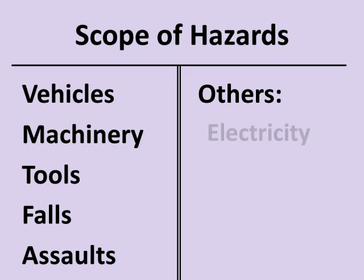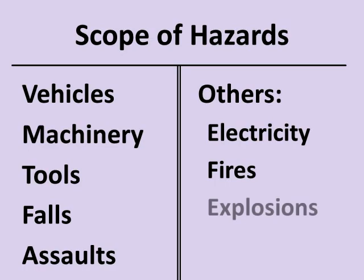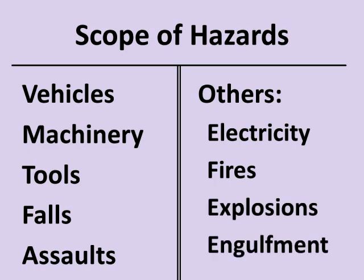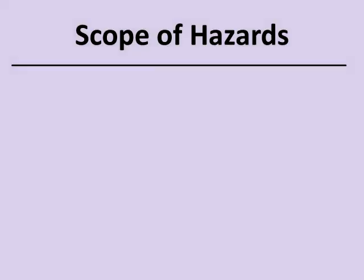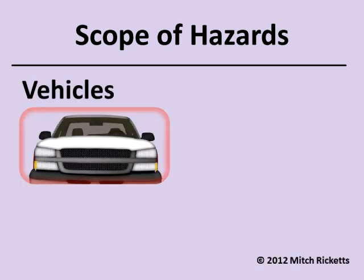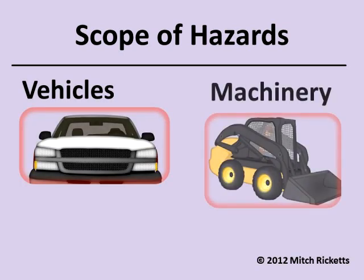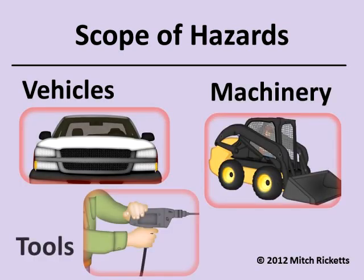Namely, electricity, fires, explosions, and engulfment in flowing materials such as grain. Let's begin by considering injuries involving equipment, such as vehicles, machines, and tools.